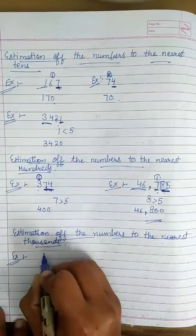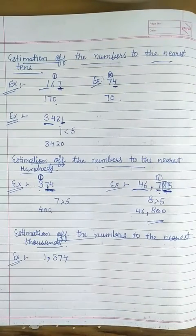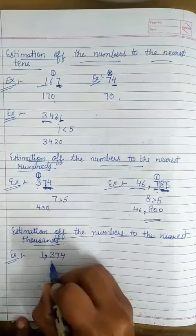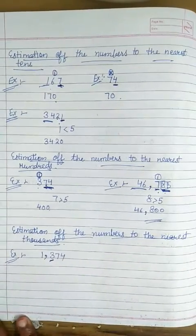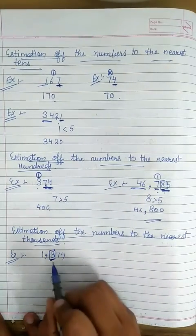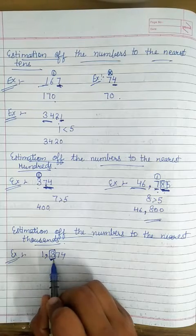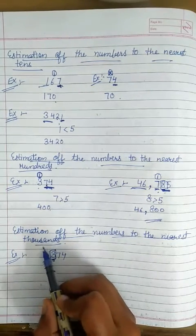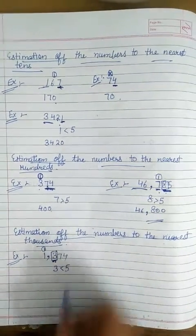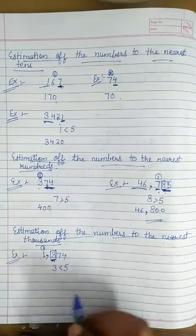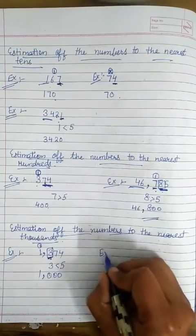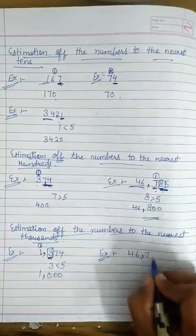Now estimation of numbers to the nearest thousands. Let us take an example: 1374. First of all we check the digit at the hundreds place — there is 3. We check whether this digit is greater than or equal to 5. If it is, then we add 1 to the thousands digit; but here 3 is less than 5, so we cannot add 1. The answer is 1000.